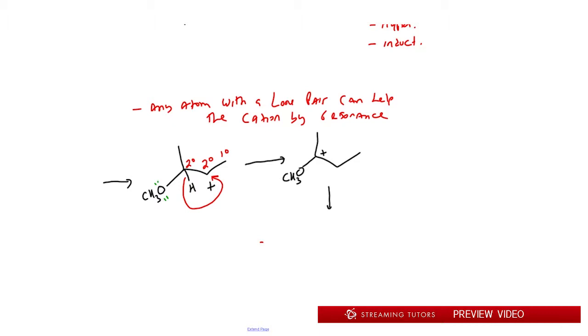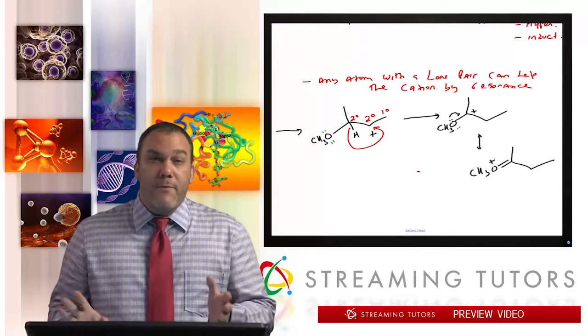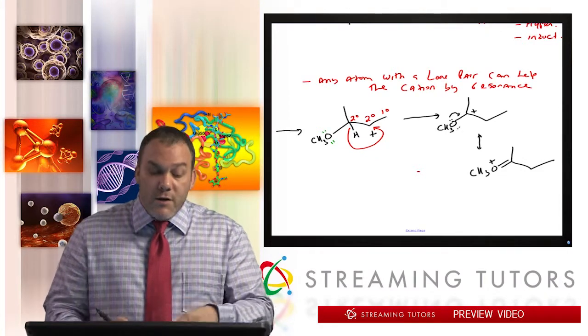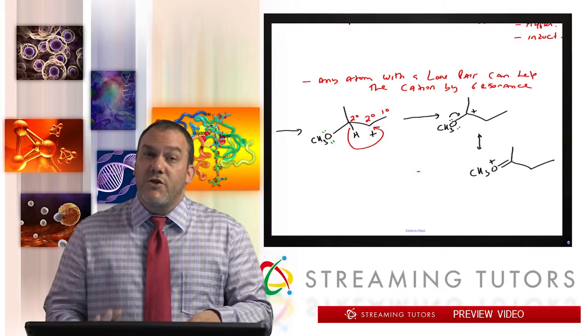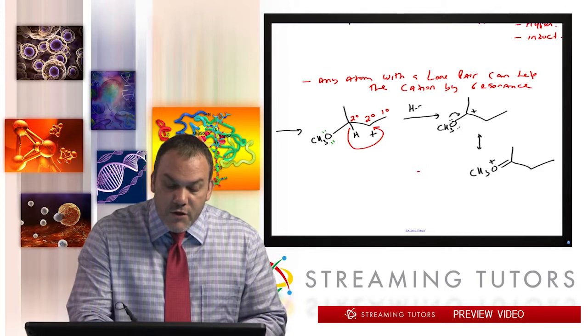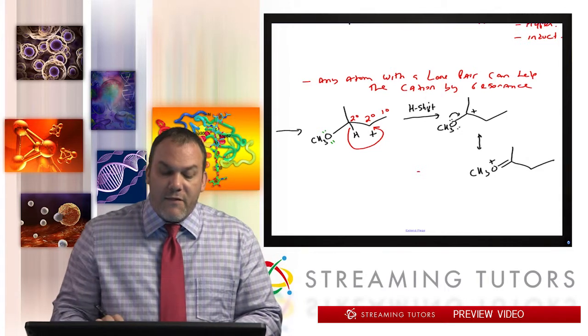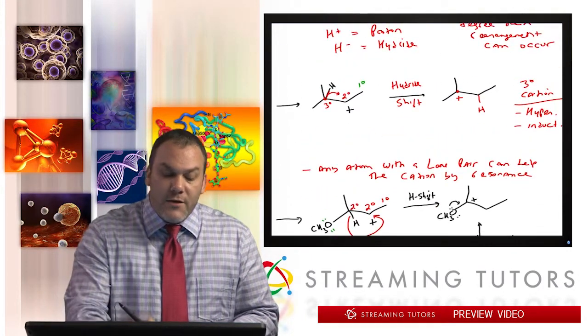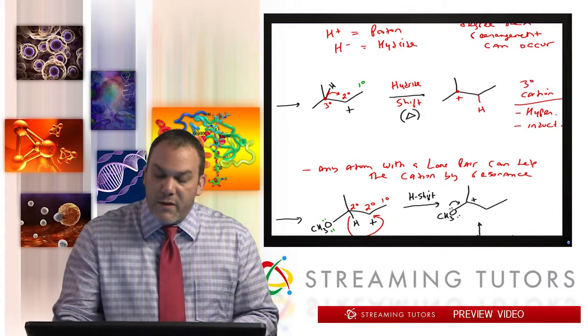Right now this here has resonance stabilization, so we've now benefited by having resonance. And I have to tell you, in organic chemistry resonance is one of the best things that you could have for a system. It's better than hyperconjugation, it's better than inductivity, because you really are moving electrons over a larger area. So this is definitely going to go through a shift. This is called an H shift; usually over the arrow you write something like that. Now all rearrangements require temperature.